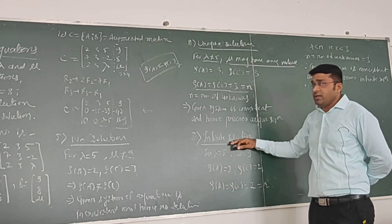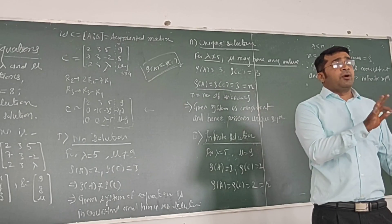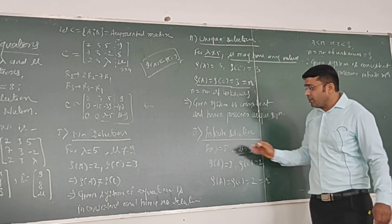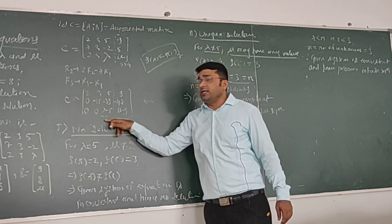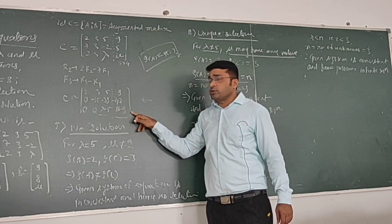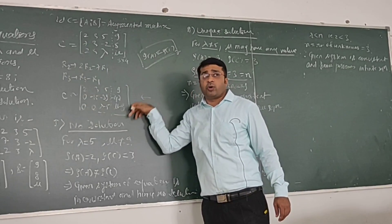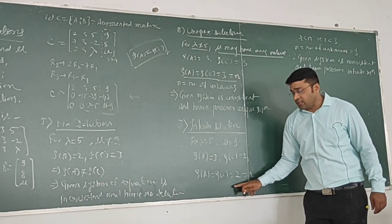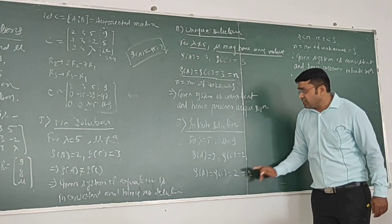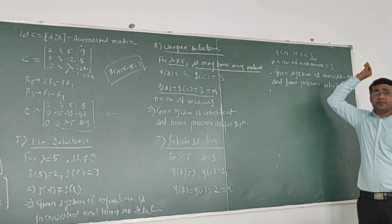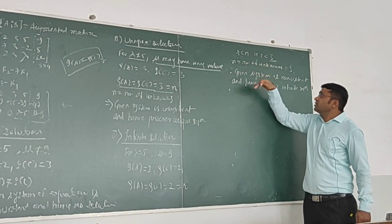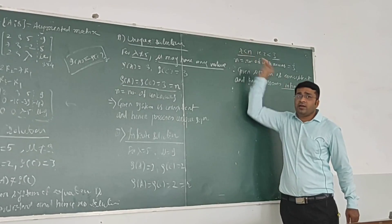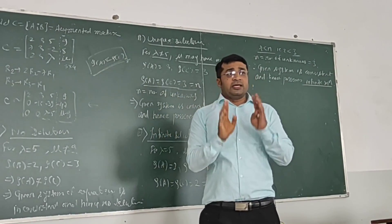For infinite solution, the rank must be strictly less than the number of unknowns. The number of unknowns is 3, so rank should be 2. We take lambda equals to 5, so rank of A is 2, and mu equals to 9, making that quantity zero, so rank of C is also 2. Both ranks are equal at 2, the system is consistent, and since rank r (2) is less than the number of unknowns n (3), the system possesses infinitely many solutions.